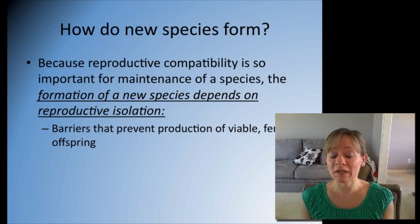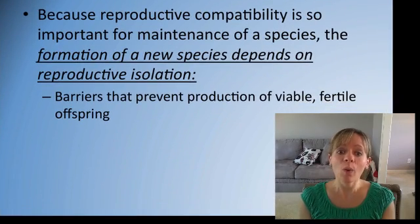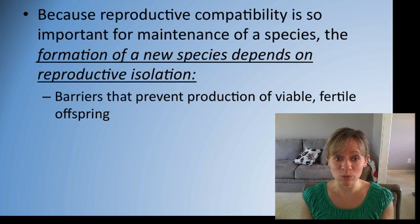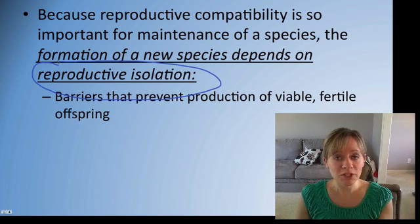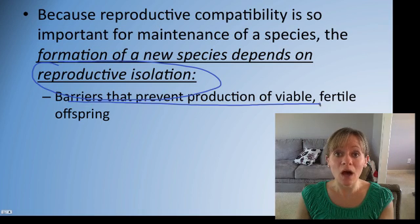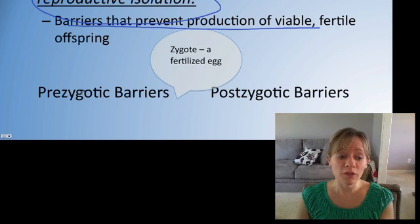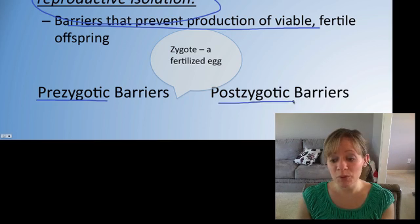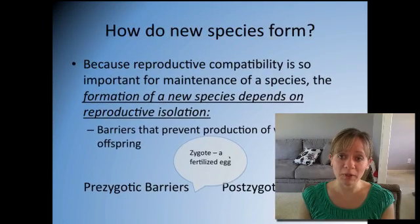How does one species become a different species? A new species comes about when there is reproductive isolation — when those members can no longer breed with one another. There are two types of barriers that prevent producing viable fertile offspring: those that happen prezygotically and those that happen postzygotically.